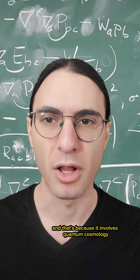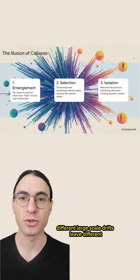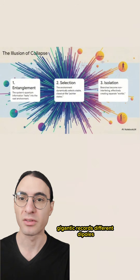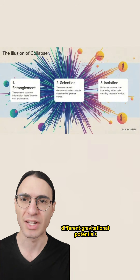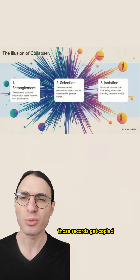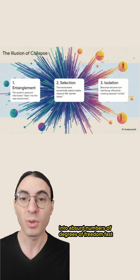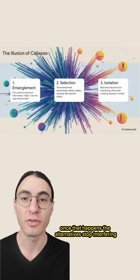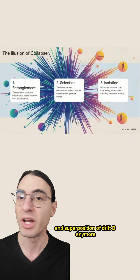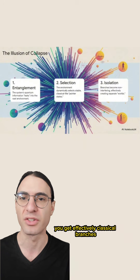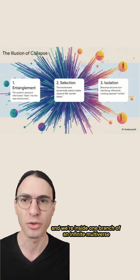And that's because it involves quantum cosmology. One possible answer is decoherence and branching. Different large-scale drifts leave different gigantic records — different dipoles, different correlations between photons and matter, different gravitational potentials. Those records get copied into absurd numbers of degrees of freedom, fast. Once that happens, the alternatives stop interfering. You don't get a superposition of drift A and drift B anymore. You get effectively classical branches, each with its own cosmic flow, and we're inside one branch of an infinite multiverse.